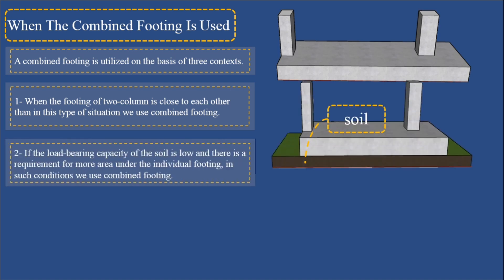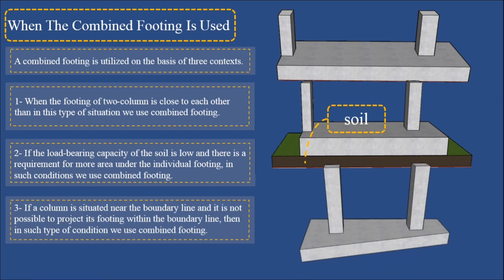Two: if the load bearing capacity of the soil is low and there is a requirement for more area under the individual footing, in such conditions we use combined footing. Three: if a column is situated near the boundary line and it is not possible to project its footing within the boundary line, then in such type of condition we use combined footing.